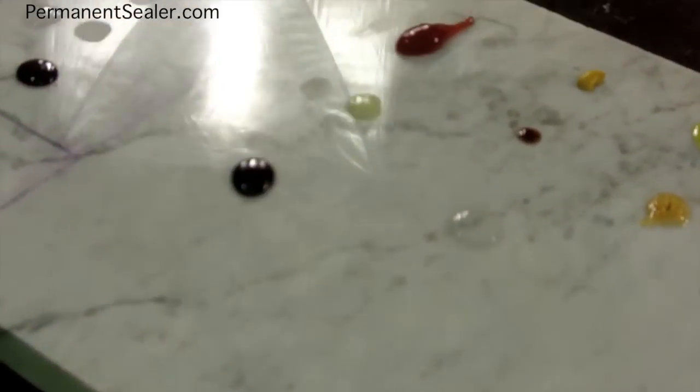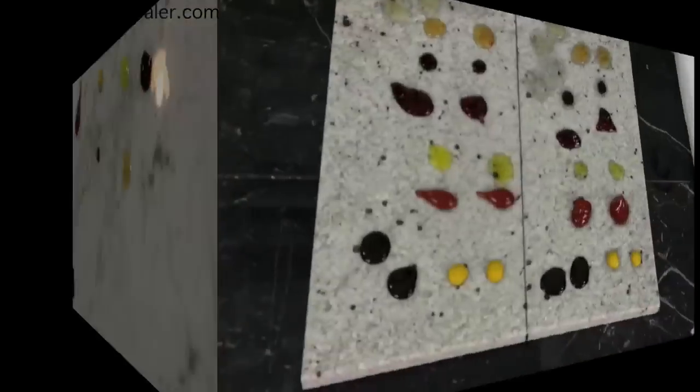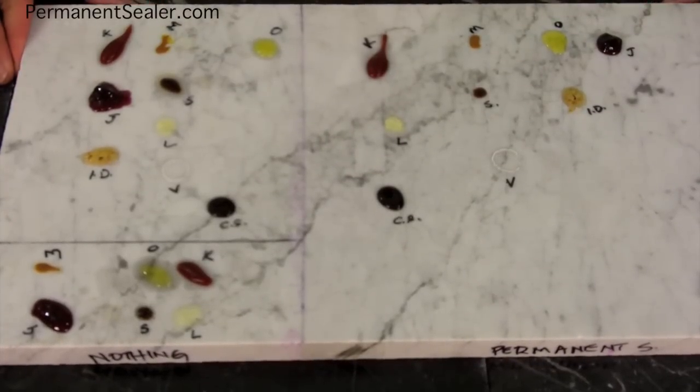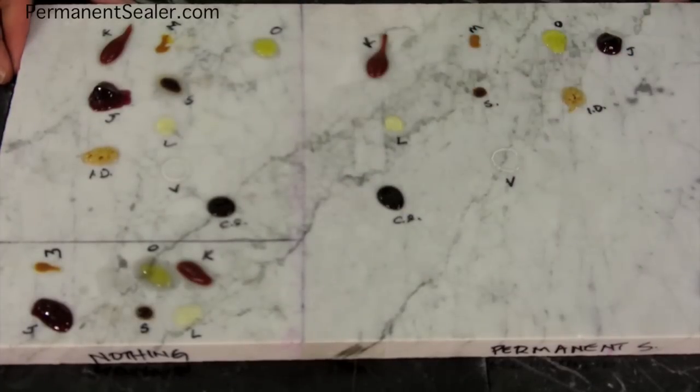So that is the marble. If you're going to get a white marble, then you will have to understand that etches will happen. If you get the permanent sealer, you'll get away with staining. This here is the white marble. We're going to clean this up and see what happened again. I just want to point out that this is the permanent sealer, 20-year sealer, and the non-sealed at all.